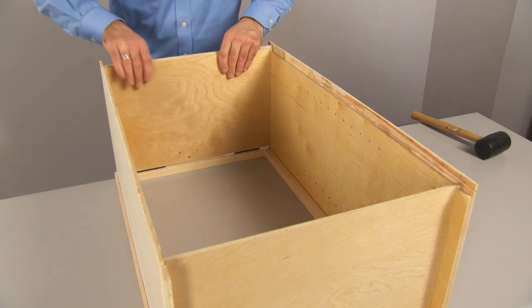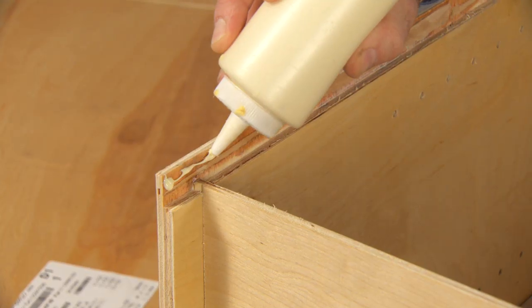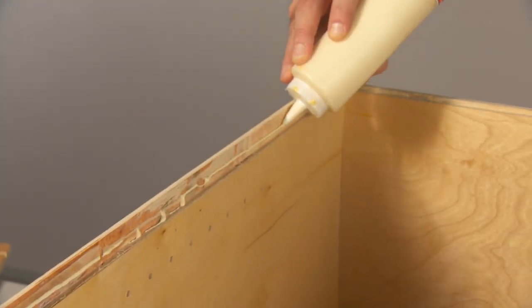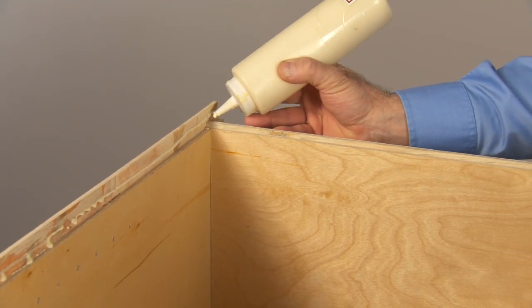Repeat this procedure for the top piece. Apply a bead of glue to the inside rabbet of the sides, and to the top and bottom.